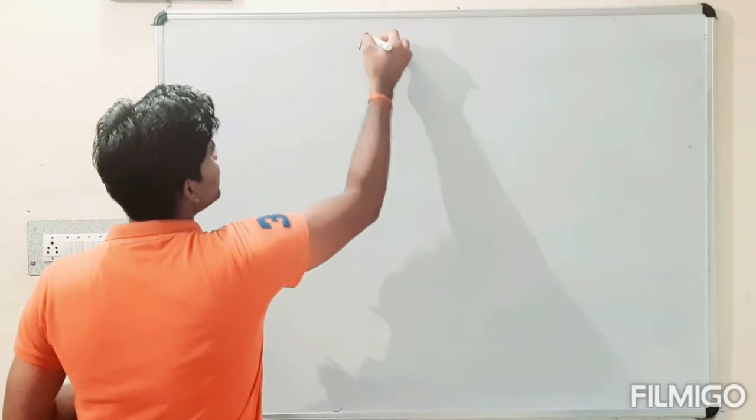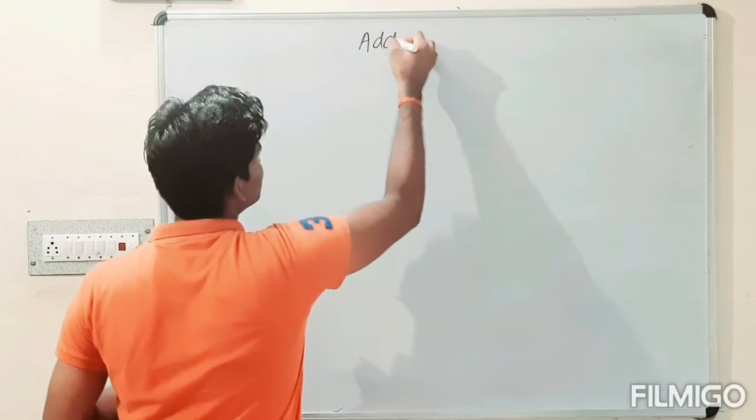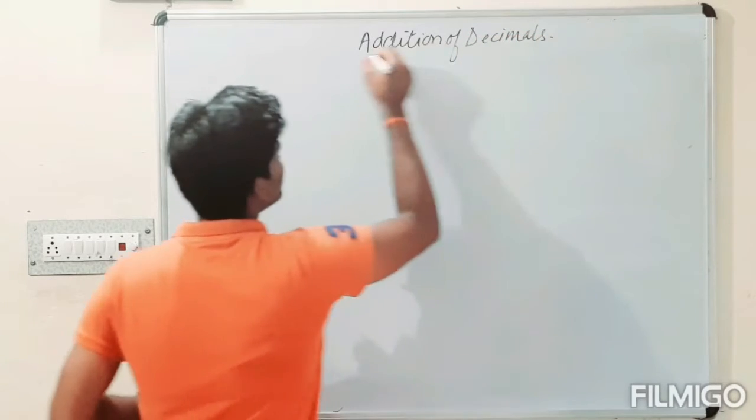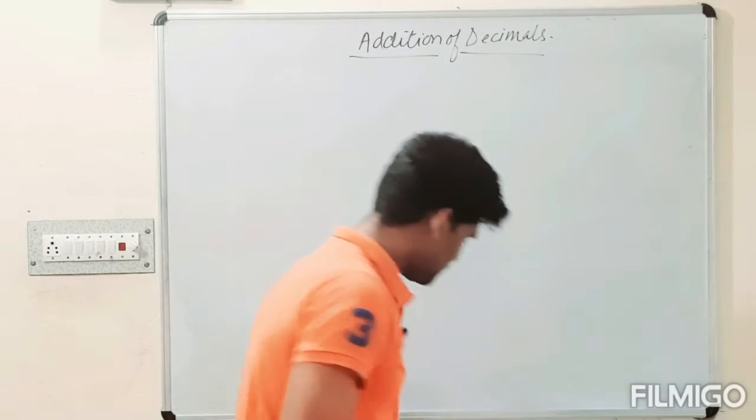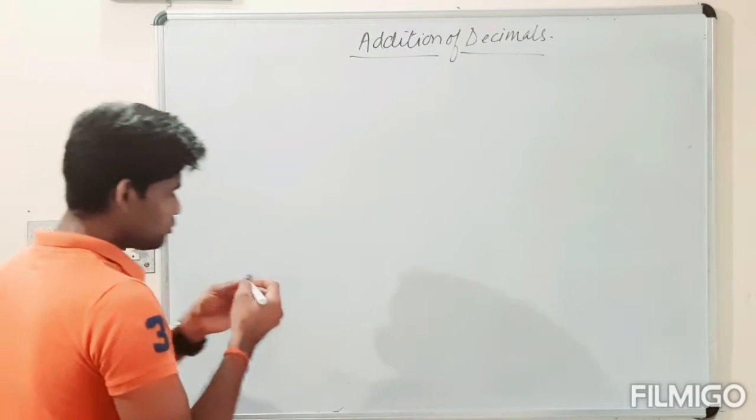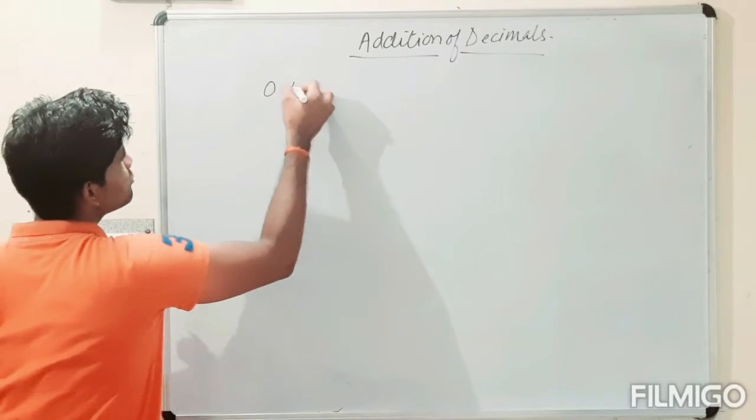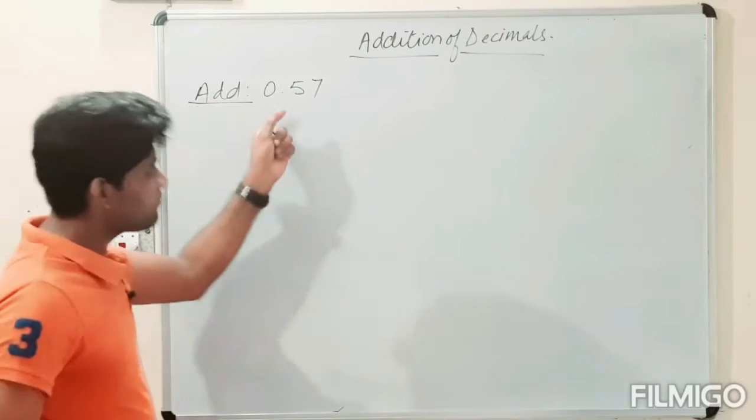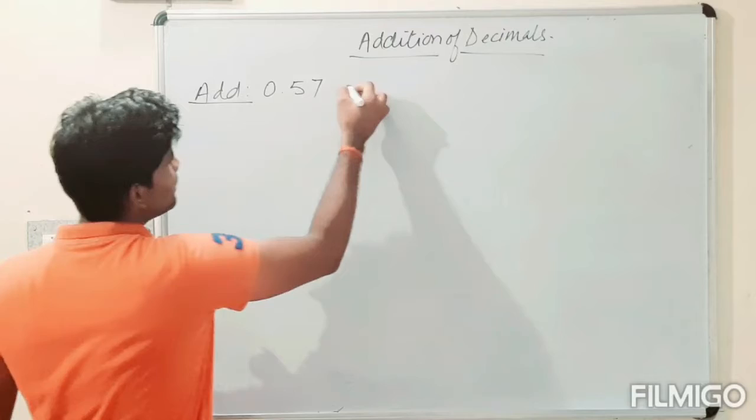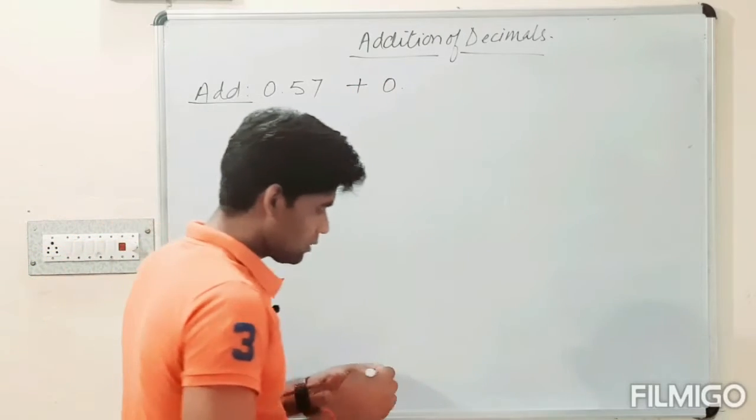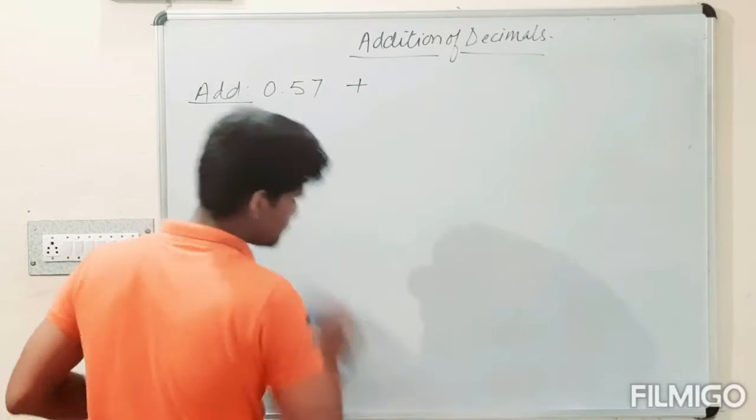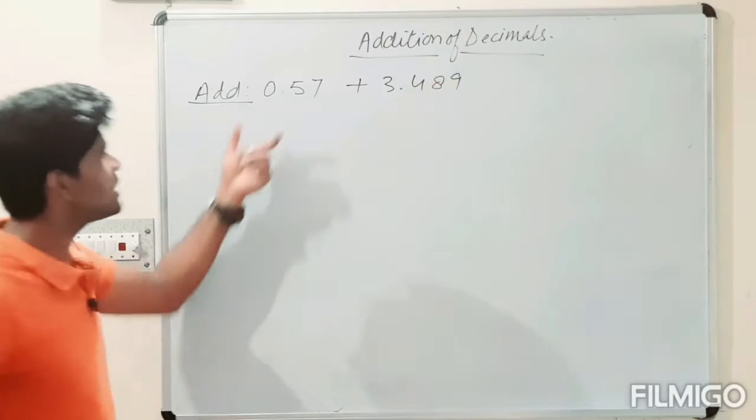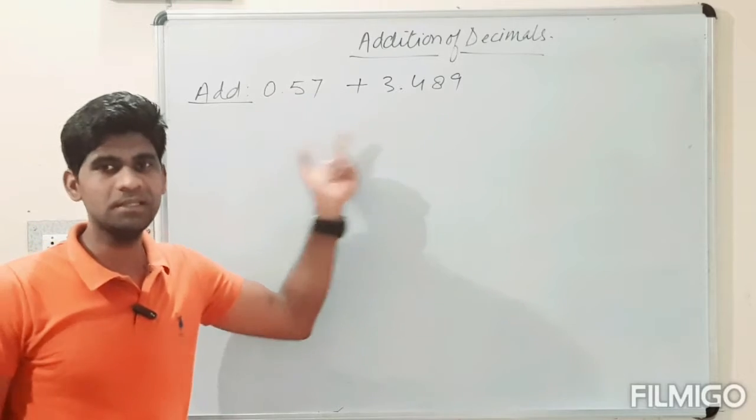Take a look. Now the addition of decimals. How will you add the two decimals? Suppose we have to add, take a simple example, 0.57. The first number is 0.57 and you need to add 3.489. These are the two decimal numbers. So we need to add these ones.